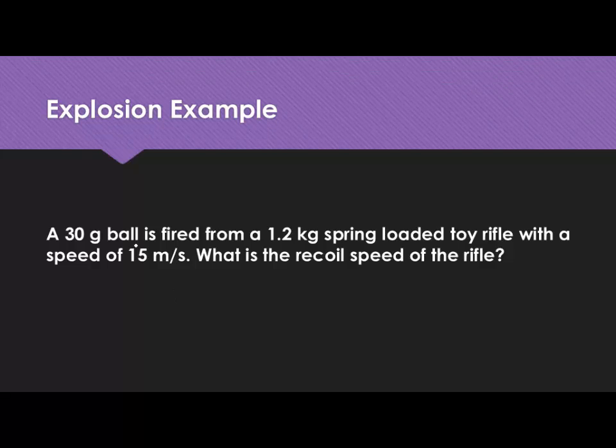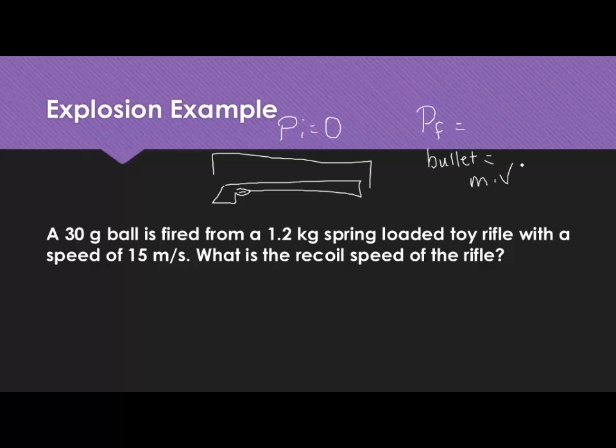Let's look at an explosion example. A 30 gram ball is fired from a 1.2 kilogram spring loaded toy rifle with a speed of 15 meters per second. What is the recoil speed of the rifle? So we have our rifle, our little toy rifle. Initially, the toy rifle and the bullet have no momentum. They are at rest. Once I fire that bullet, it now has a momentum which is its mass times its velocity. The mass is 0.03, right, because we have to convert that to kilograms. 0.03, and it leaves with a velocity of 15. So that gives it a momentum of 0.45.